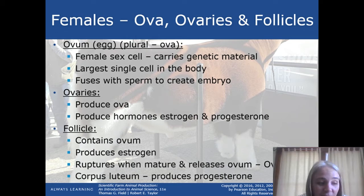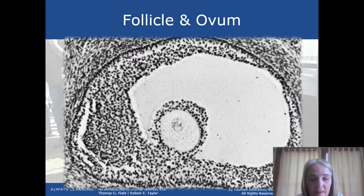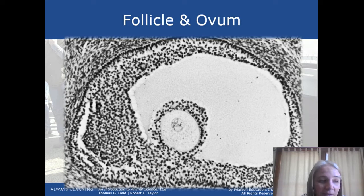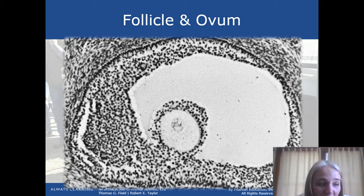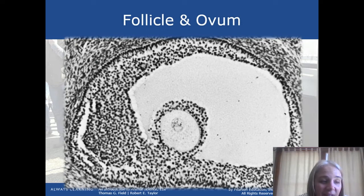After the follicle has released the ovum, it becomes a corpus luteum, or yellow body — you'll read more about that in the text. The corpus luteum produces progesterone, which is vitally important in maintaining pregnancy. Here's a picture taken under a microscope — this is actually a follicle in a cow's ovary, magnified 265 times. The smaller circle near the center is the egg, and the large light gray circle is the fluid that fills the follicle.